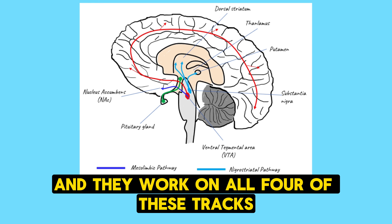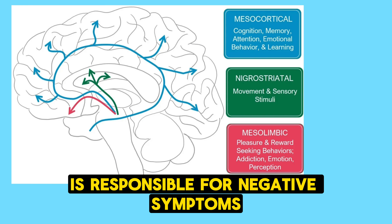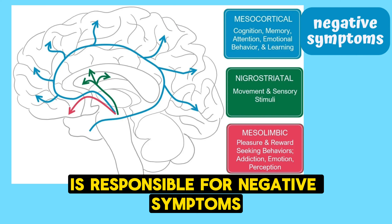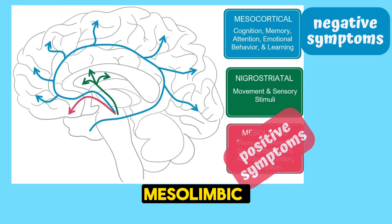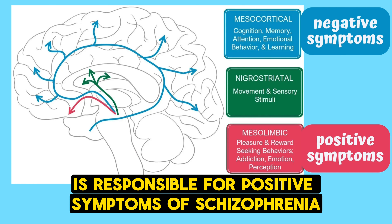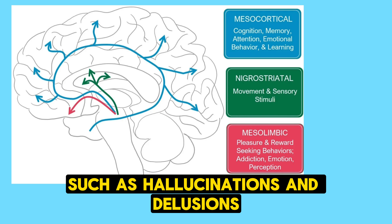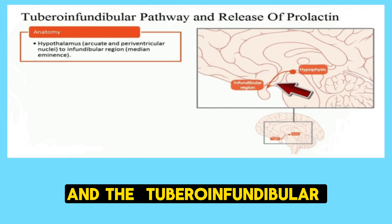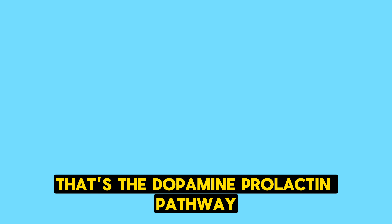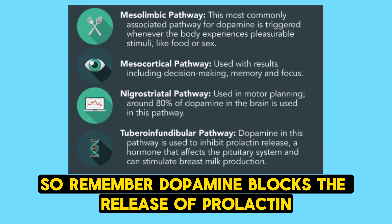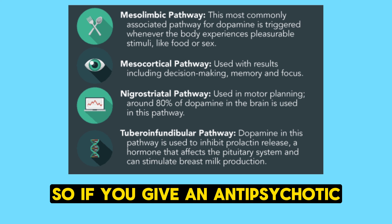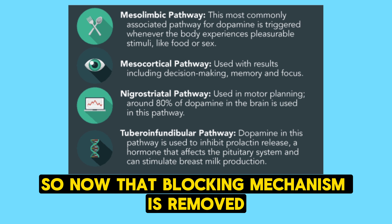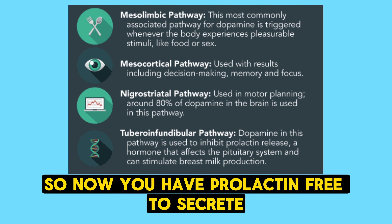Mesocortical is responsible for negative symptoms such as cognitive deficits and social withdrawal. Mesolimbic is responsible for positive symptoms of schizophrenia such as hallucinations and delusions. The tuberoinfundibular is the dopamine-prolactin pathway. Dopamine blocks the release of prolactin, so if you give an antipsychotic and block dopamine, that blocking mechanism is removed and prolactin is free to secrete.